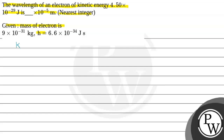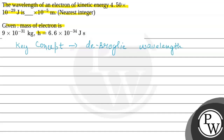First, let's look at the concept this question is based on — the concept of de Broglie wavelength. de Broglie hypothesized that all material particles possess wave character as well as particle character. The formula given for finding the wavelength is λ = h / √(2mKE).